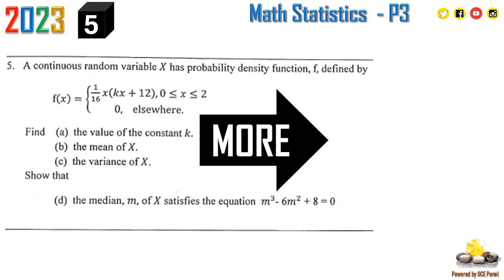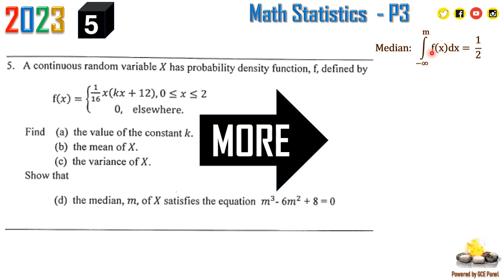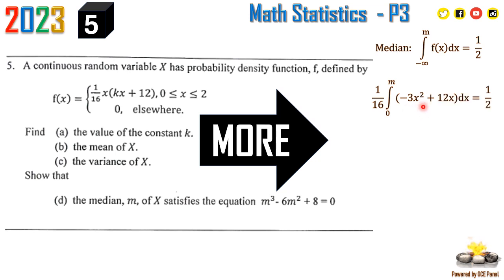The last part of the question wants us to prove that the median satisfies a given equation. The median m of a probability density function satisfies: the integral from 0 to m of f(x) dx = 1/2. With f(x) = (1/16)(−3x² + 12x), we set up (1/16) × ∫₀ᵐ (−3x² + 12x) dx = 1/2.